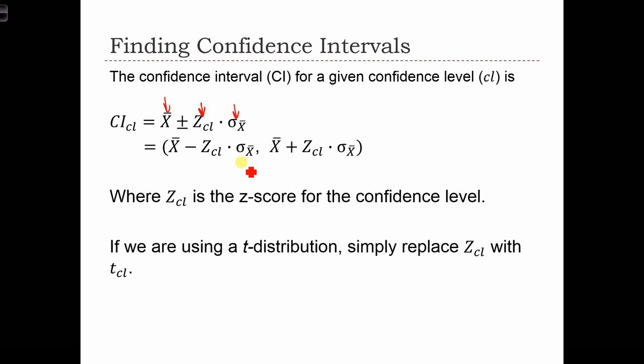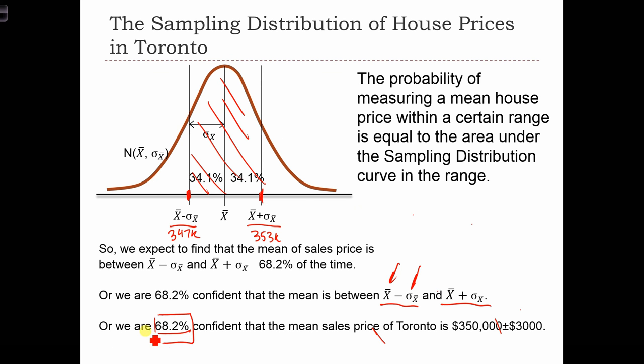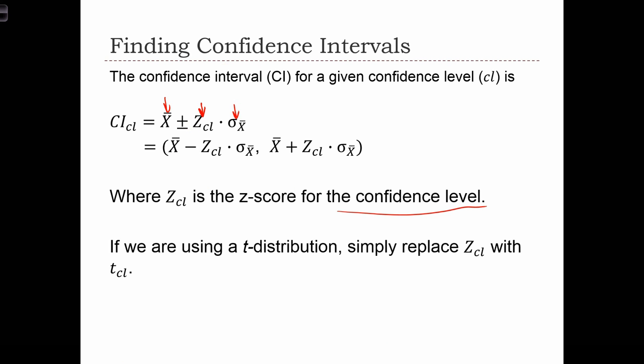That z-score is specific to the confidence level that we're interested in. So if we were interested in the confidence level of 68.2%, then the z-score that we are going to use is just equal to 1. What you're not seeing here is the 1 standard error, minus 1 standard error. So in that case, the z-score was just equal to 1.